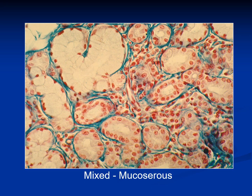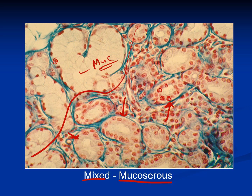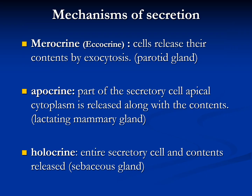A third type is the mixed gland — the mucoserous gland — which can produce both mucous and serous secretion. In a mixed gland, one part shows the nucleus at the periphery (mucous), while another part shows the nucleus centrally placed (serous). So a single gland can contain both mucous and serous secretory units.